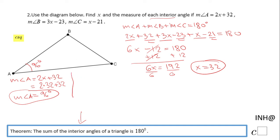So let's move to the next angle, angle B. The measure of angle B is 3x - 23.